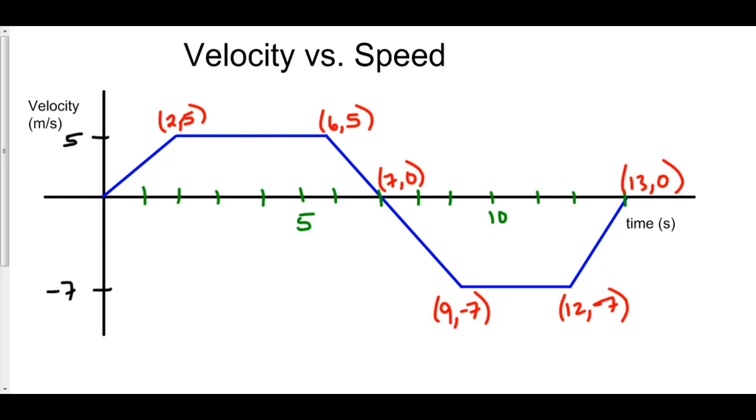So for example, consider the following velocity graph. The velocity increases, remains constant at 5 at time t equals 2. At time t equals 6, the velocity then decreases. We have zero velocity at time t equals 7,